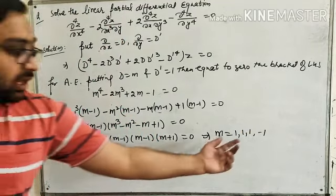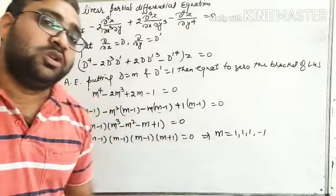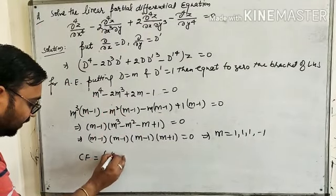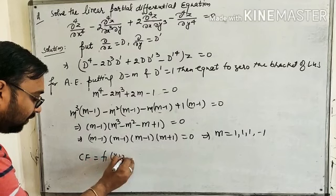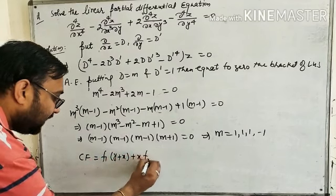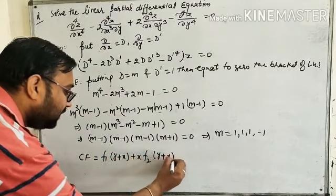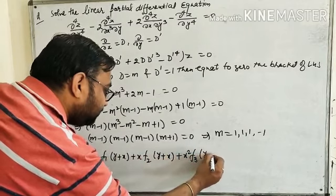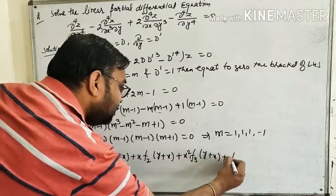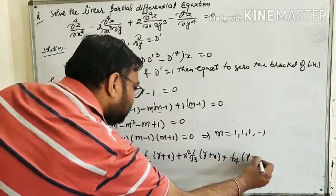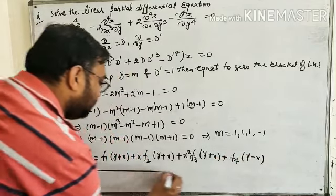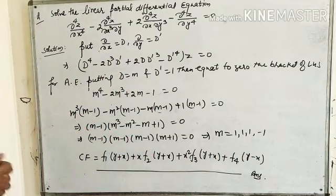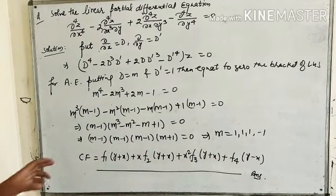Three roots are equal (m = 1) and one is unequal (m = -1). Applying Case 2 for the repeated roots and Case 1 for the distinct root: CF = f₁(y + x) + x·f₂(y + x) + x²·f₃(y + x) + f₄(y - x). This is the complete solution.